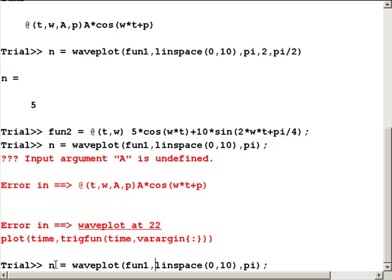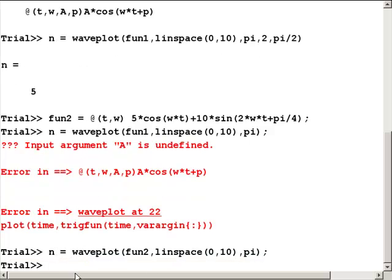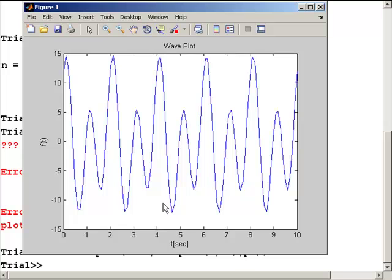So let me try it again, but this time I'll make sure to remember to change fun1 to fun2 and run it. Now let's take a look at our figure. We can see the effect of adding the sine and the cosine waves of different amplitudes and different frequencies. That's going to conclude this example. I would encourage you to download this M-file, run it with the debugger, and get a good understanding of what's going on.